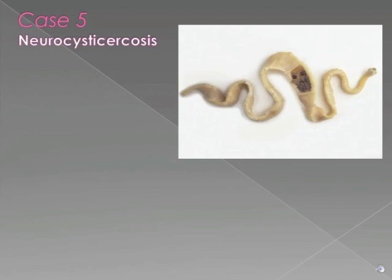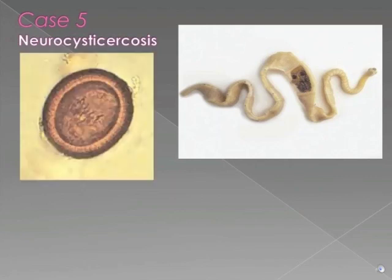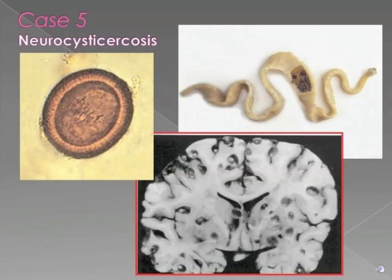Normally humans play the role of definitive host to this parasite and it lives in our intestines. When we make the mistake of eating the eggs of Taenia solium, we become the intermediate host, which is a role normally played by the pig. With humans as the intermediate host, the eggs and larval forms take up residence in various body tissues including the brain. The encapsulated cystic structures can be asymptomatic for up to 10 years.